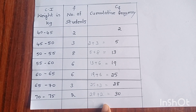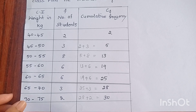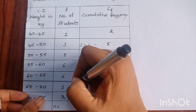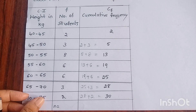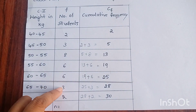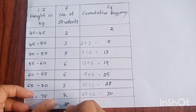Now we have prepared the cumulative frequency table. We know that the median class depends upon n by 2. So first we have to find out n. We know that n means it is the total of the frequency table — that is 2 plus 3 plus 8 plus 6 plus 6 plus 3 plus 2, which equals 30. So n is 30.